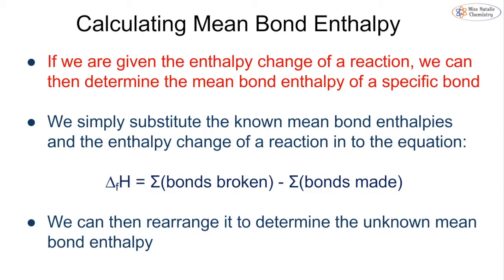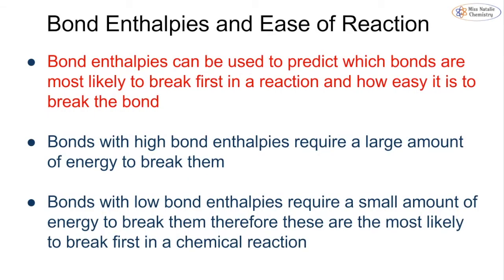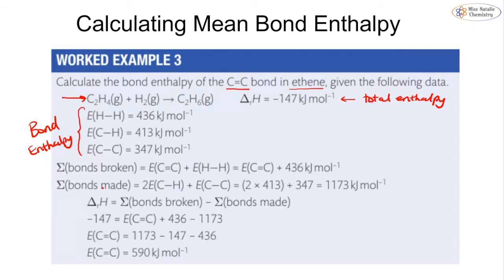Sometimes you are given the enthalpy change of a reaction and asked to determine a specific mean bond enthalpy. You substitute the known values into the equation and rearrange to find the unknown. For example, to find the bond enthalpy for the C=C double bond in ethene, we identify the bonds broken: one C=C (unknown) and one H–H (436 kJ/mol).